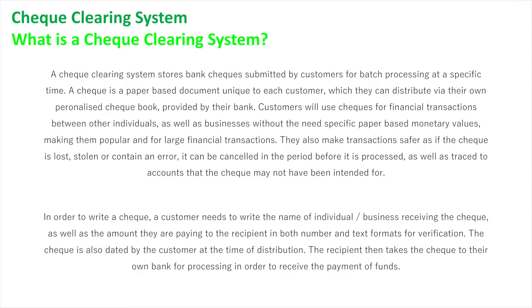The check is also dated by the customer at the time of distribution. The recipient of the check then takes that check to their own bank for processing in order to receive the payment of funds. We're going to look at this system today quite simply, assuming the recipient and the giver of the check are both from the same bank, meaning there's no external entity of another bank involved — keeping it simple as all internal to one bank system.